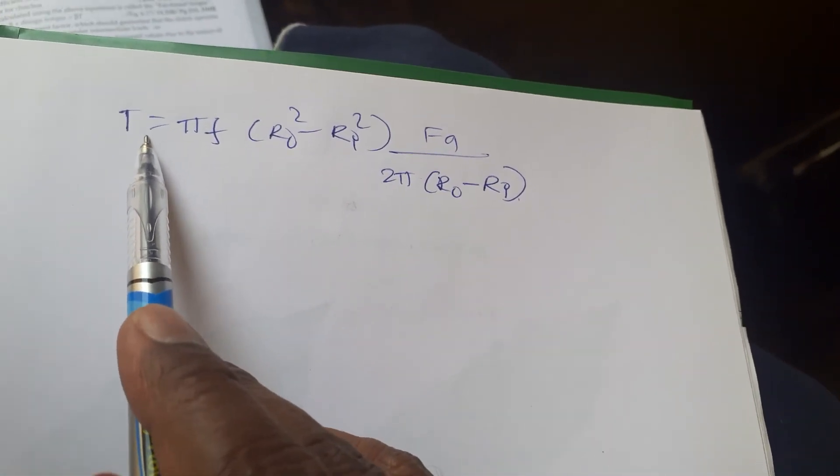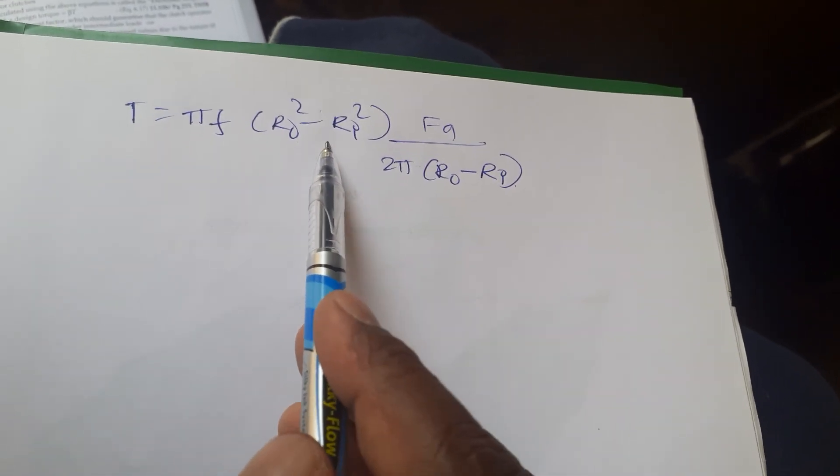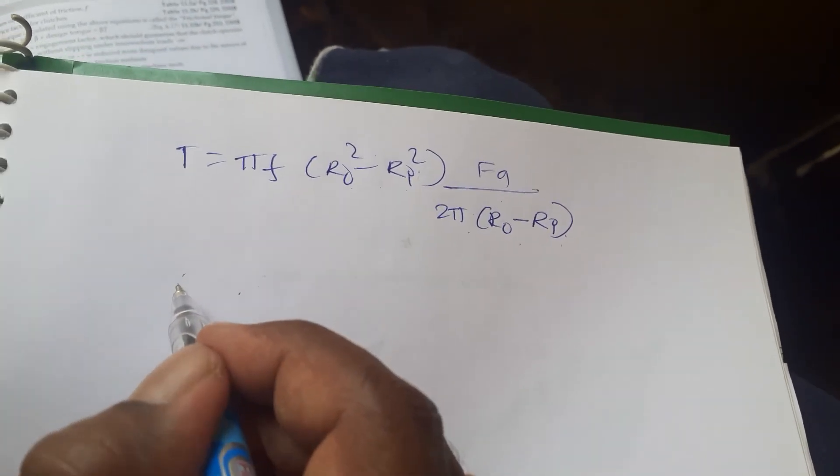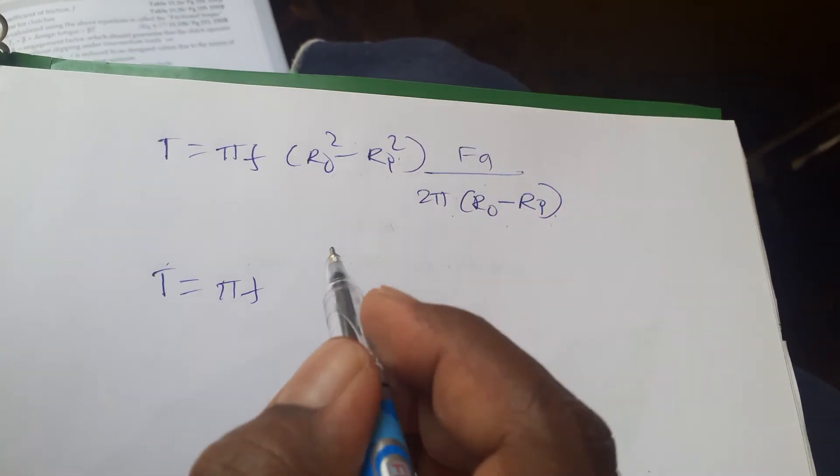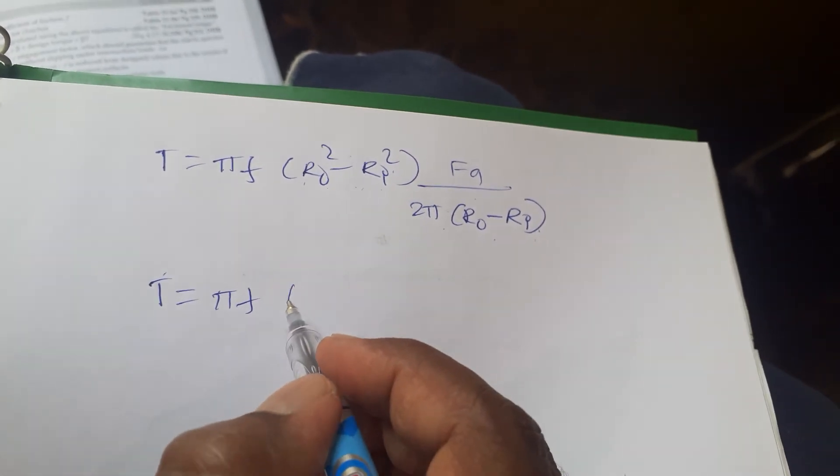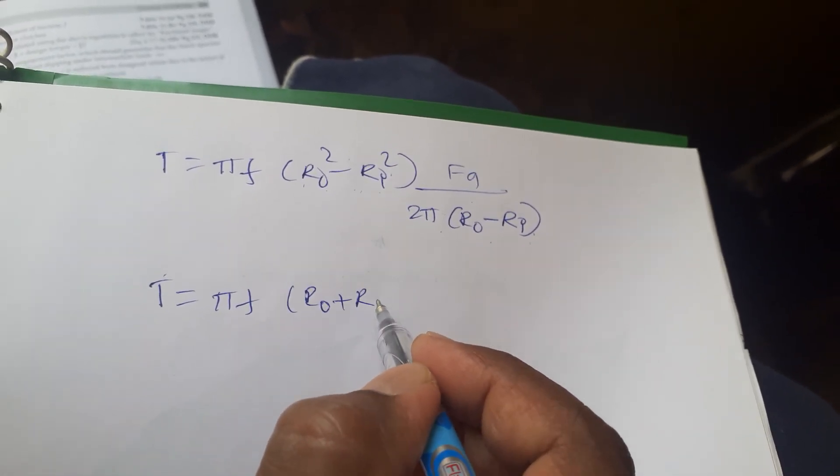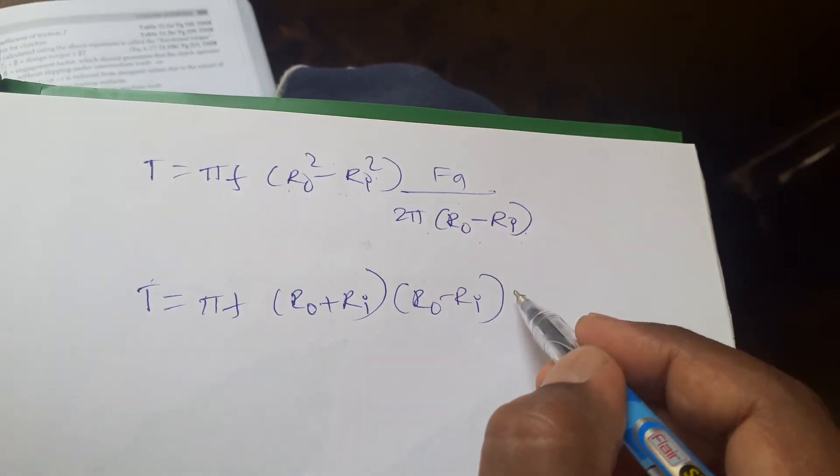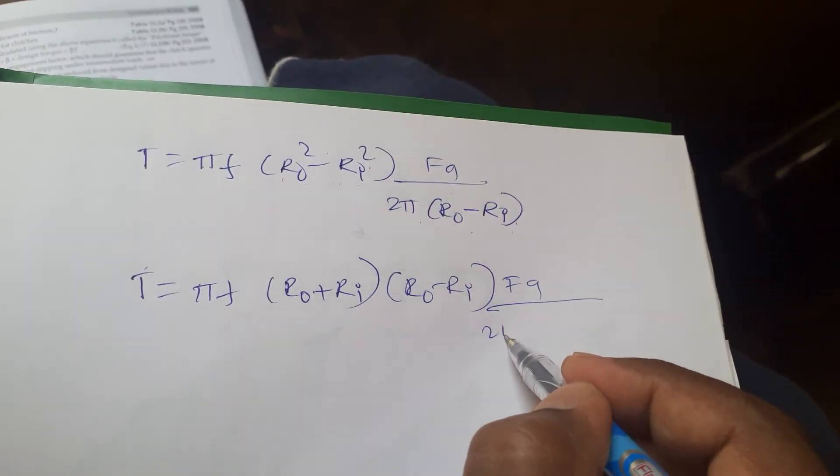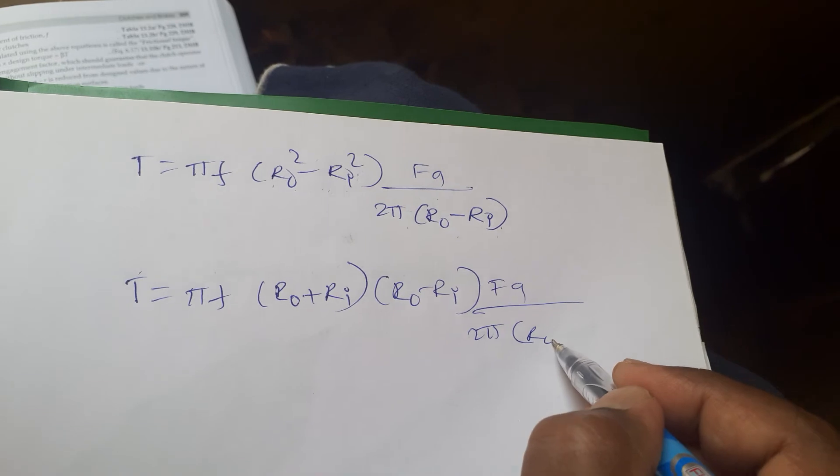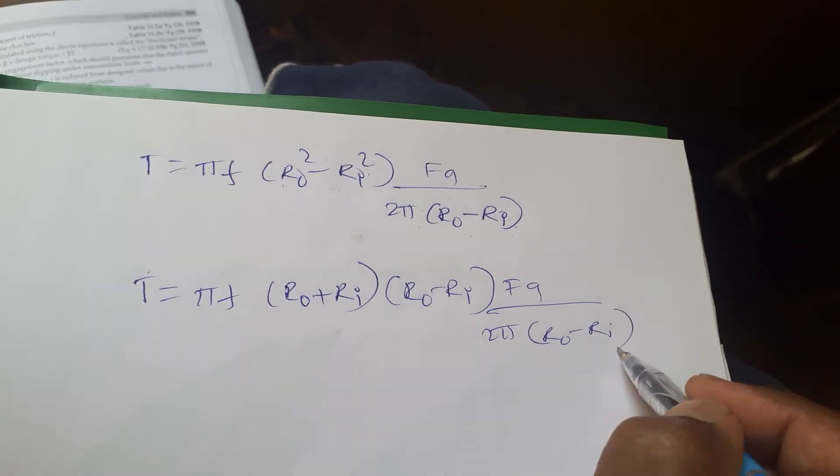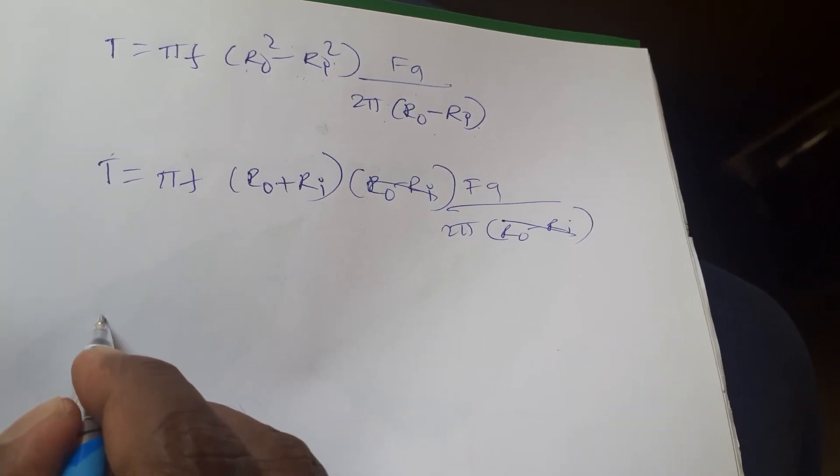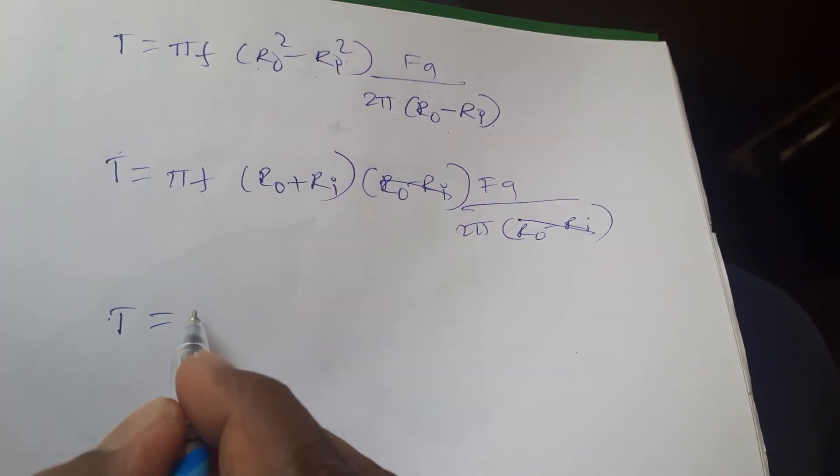After substituting, it will become T is equals to pi F, R out square minus Ri, FA into 2 pi R out. If you say T is equals to pi F, this is A square minus B square, R out plus Ri, R out minus Ri, FA divided by 2 pi R out minus Ri. This will go cancel.